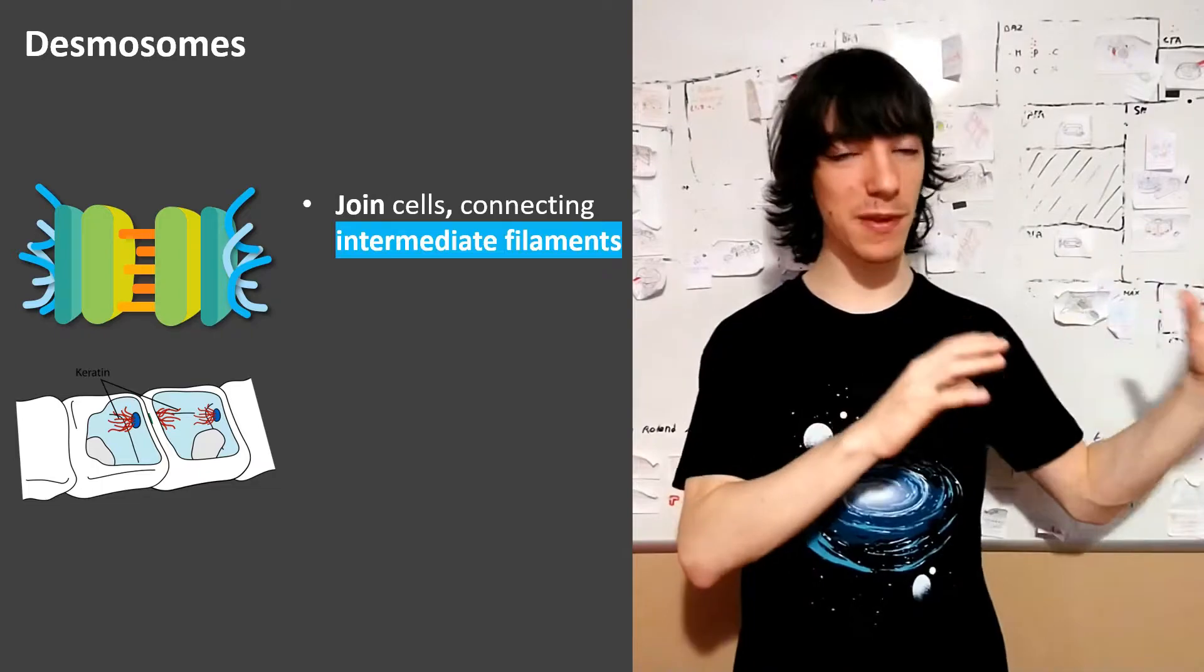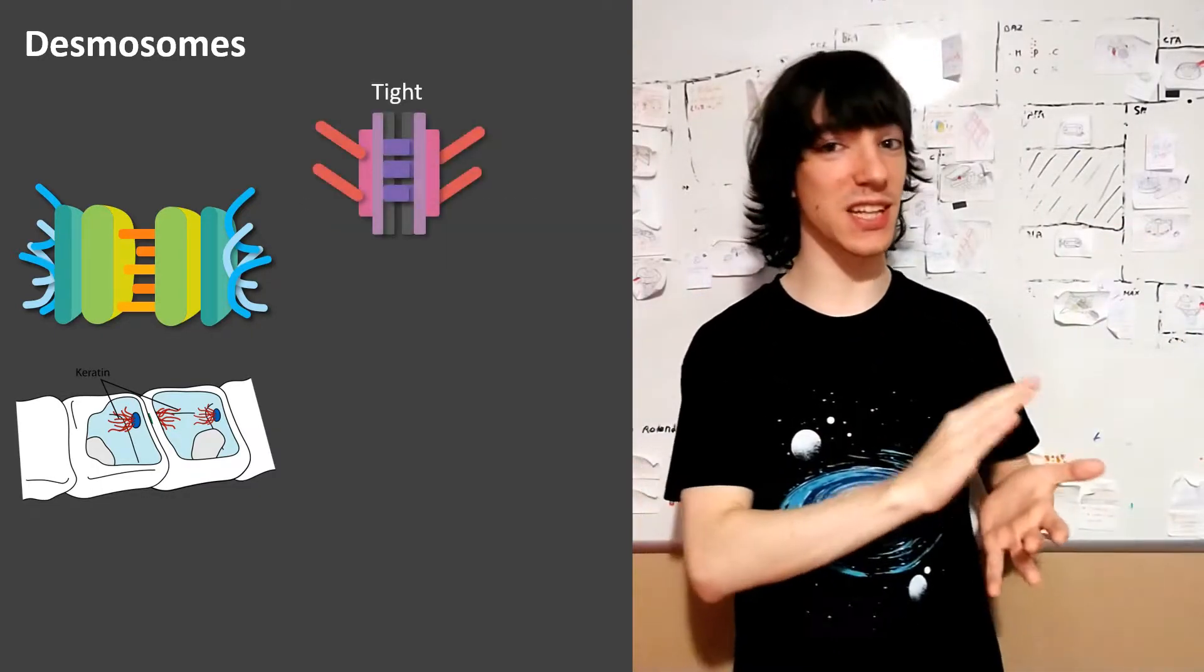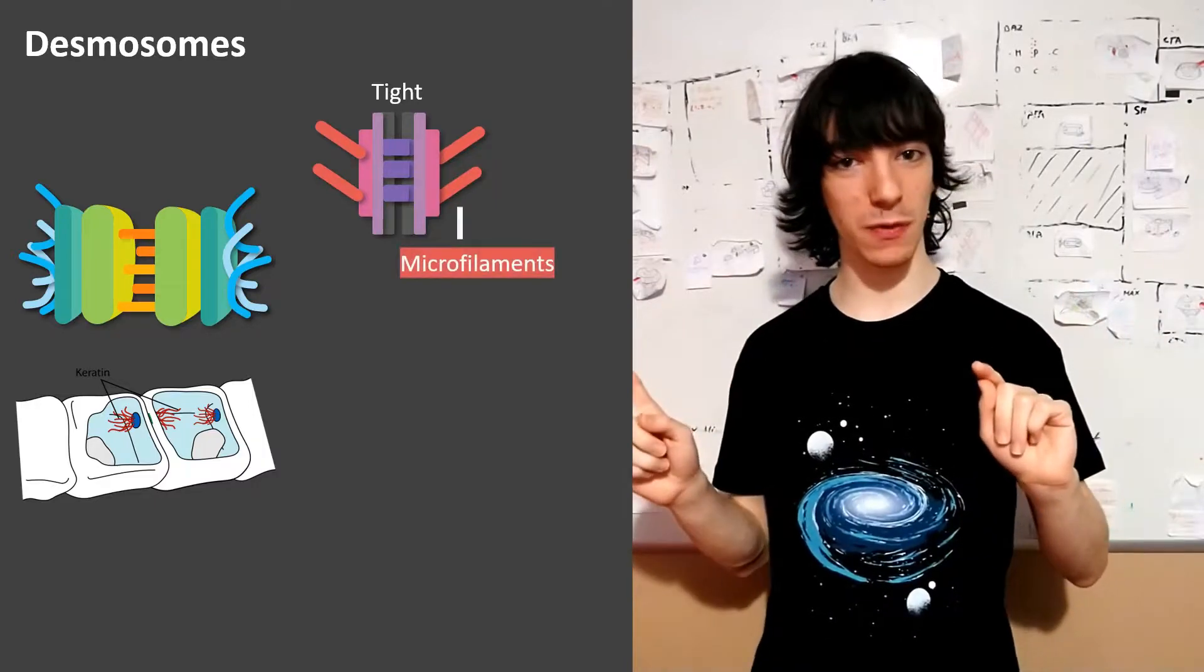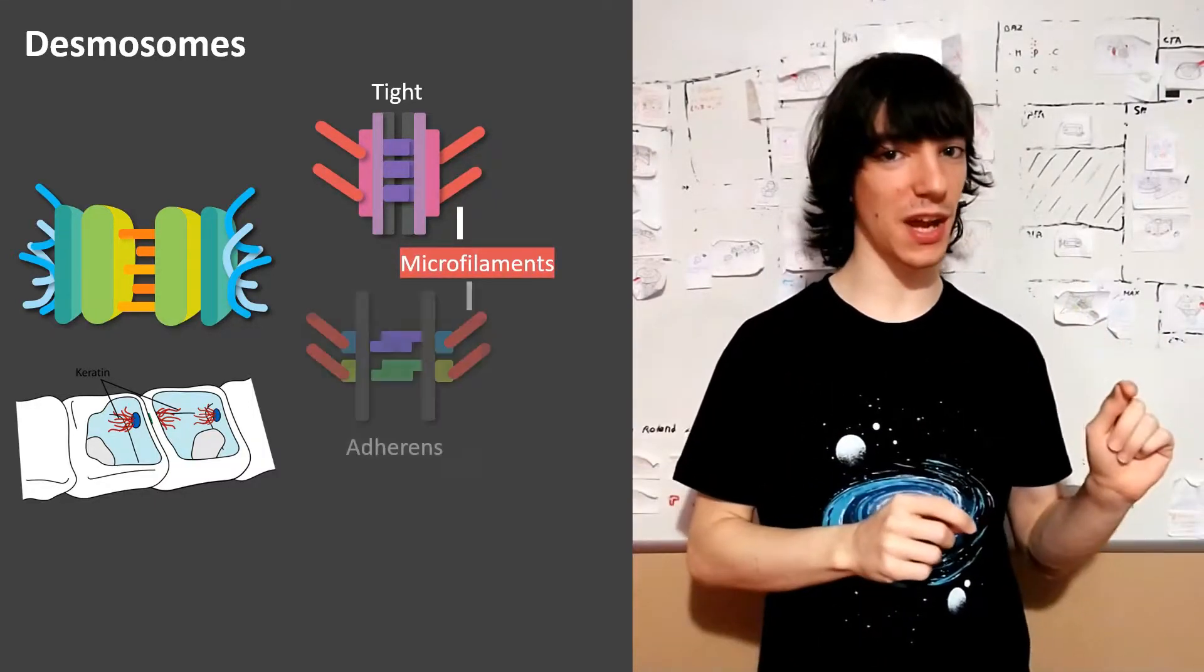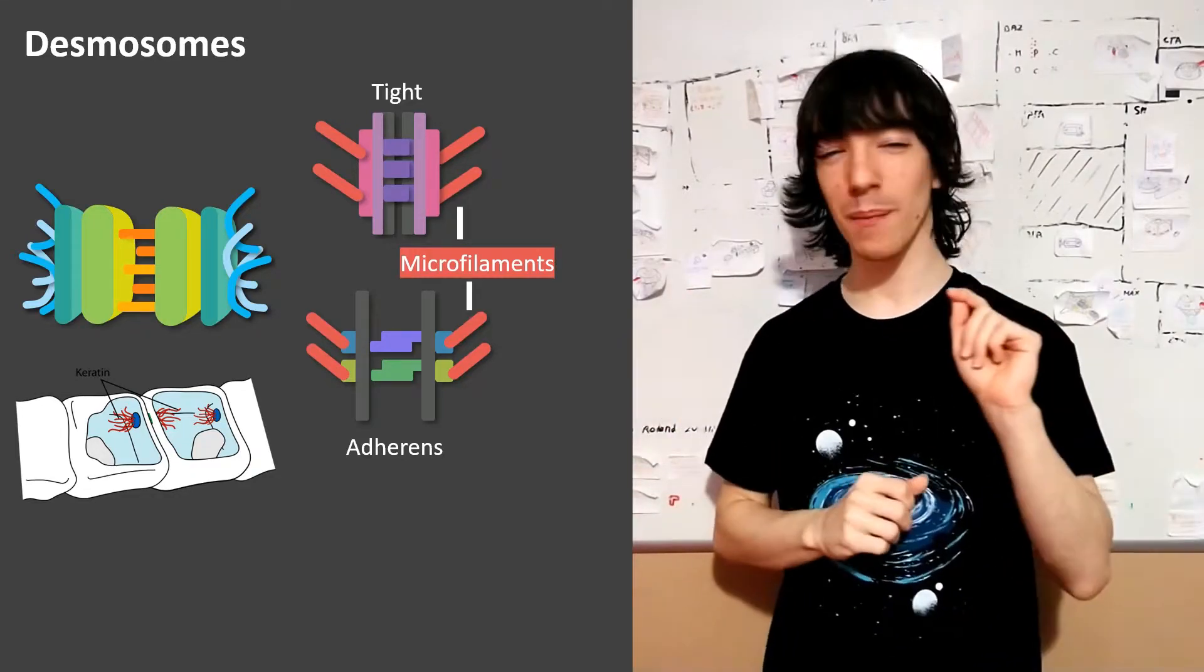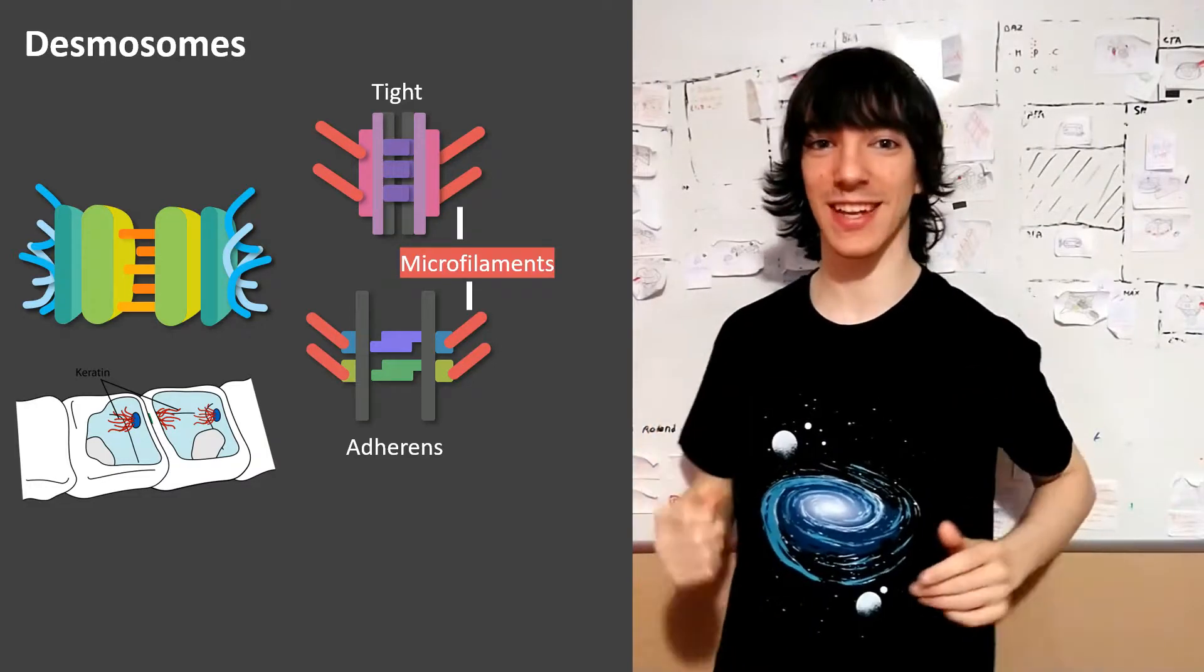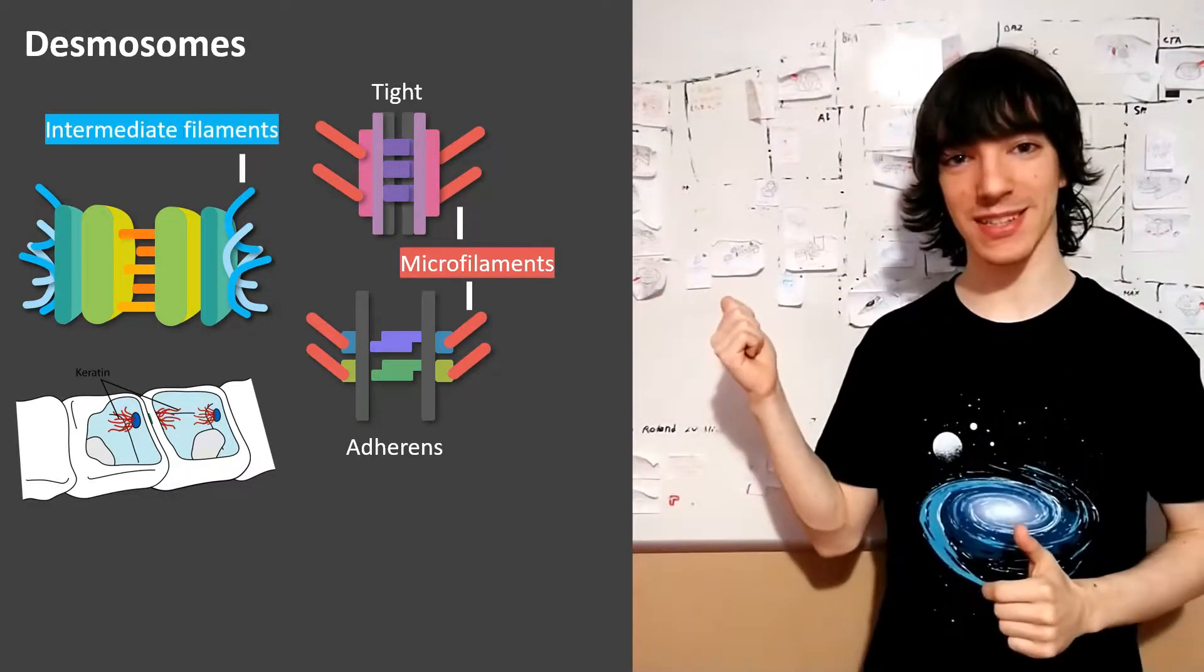That's important. If you have been following this series of videos, we first started talking about tight junctions—they connected actin microfilaments. Then adherence junctions, they also connected the actin microfilaments. But now it's time for bigger guys, thicker filaments, the intermediate filaments.